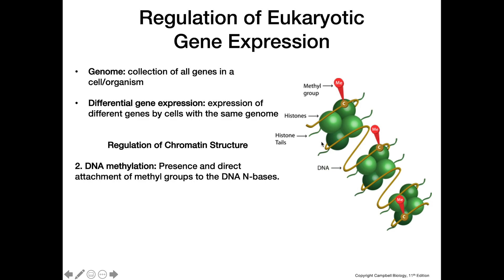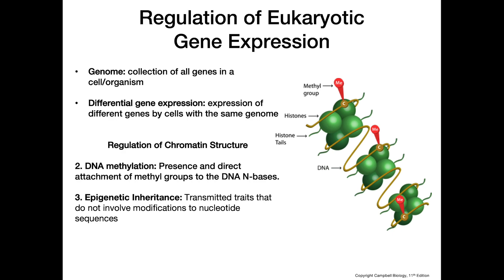When methyl groups get added, they typically reduce transcription. So whereas acetylating the histones increases transcription, methylation not only typically decreases transcription, but it's also attached to the nitrogenous base cytosine instead of to the histone tail.